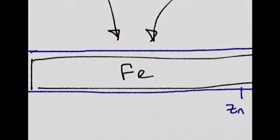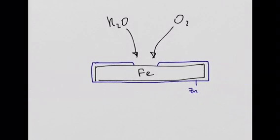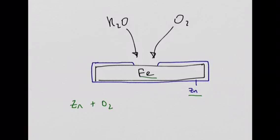But secondly, and this is the really cool thing, is that if you end up getting a scratch in that zinc surface, now it looks as if the oxygen and the water can reach the iron. But the cool thing is, because the zinc is more reactive than the iron, the zinc is more likely to react with the oxygen to form zinc oxide.